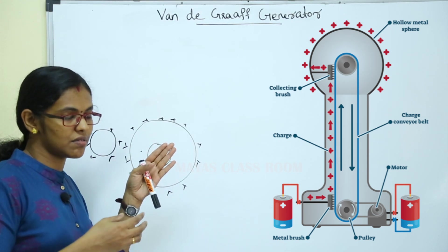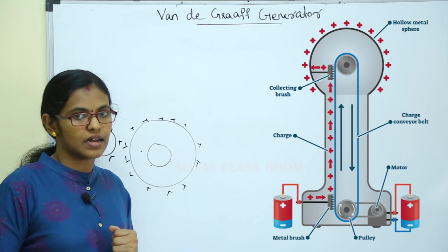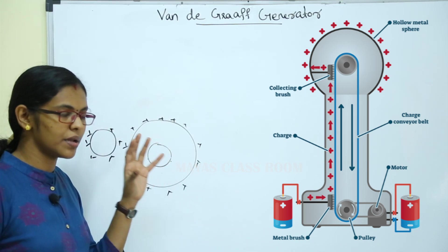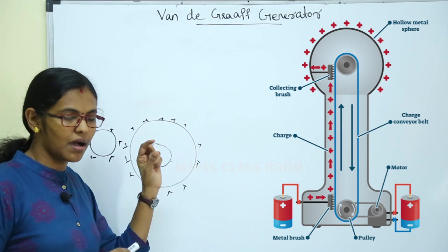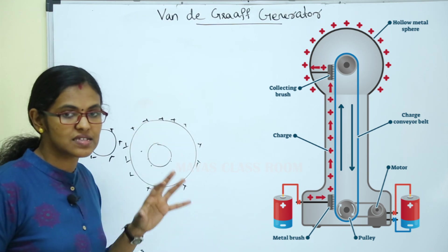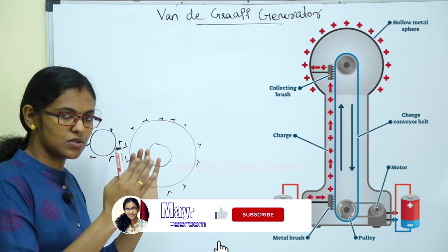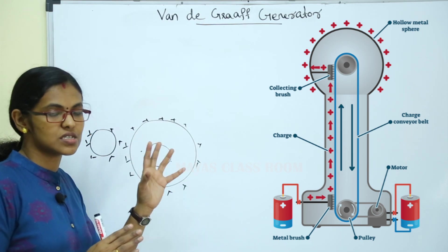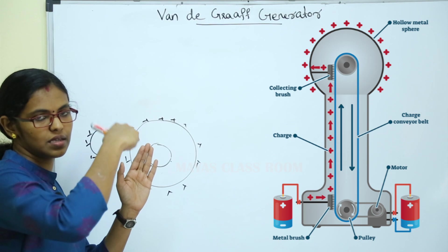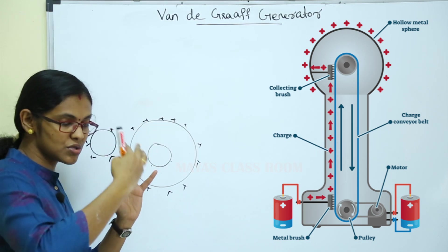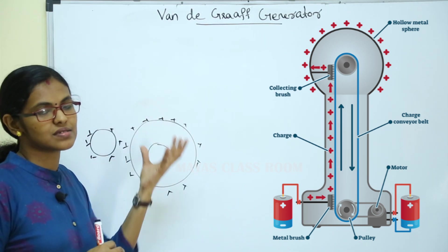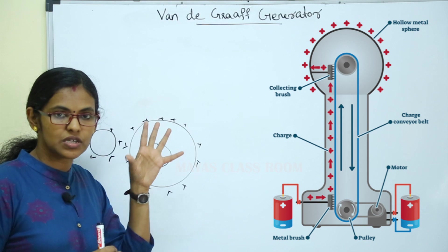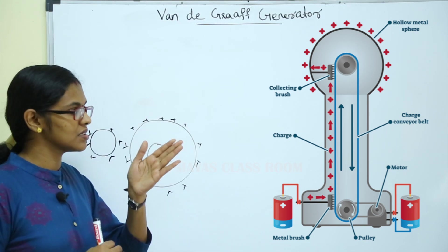If the electrons are cancelled by the positive charge, only positive charges remain. We have 10 kV of high potential. Then positive charges go to the sharp edges. The high potential ionizes the air, electrons cancel into positive charge. That positive charge is deposited onto the belt and moves upward. The air cancels into positive charge, and that positive charge reaches the collecting comb.